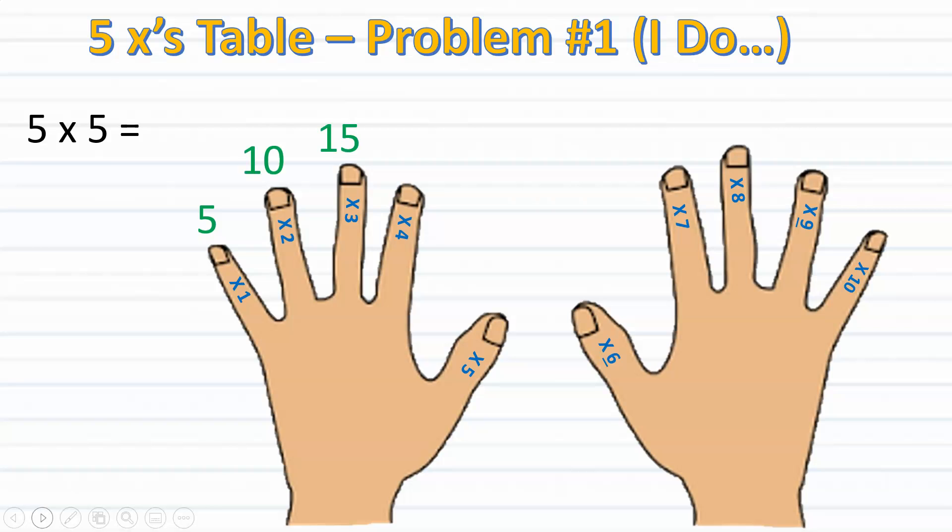So here's how it goes. 5, 10, 15, 20, 25, stop. I stopped at my fifth finger since I was multiplying by 5 times 5. Therefore, I know that 5 times 5 equals 25.